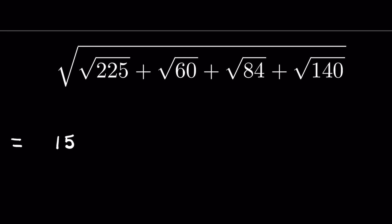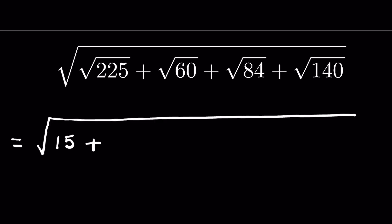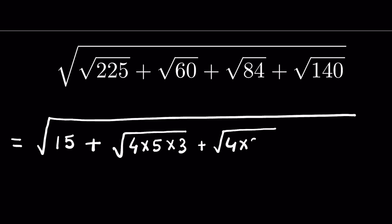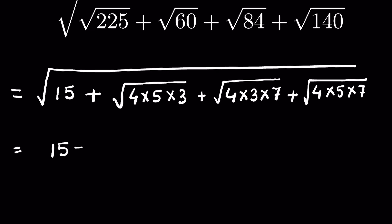Because 15 × 15 = 225, we can write 225 as 15² under the square root, so the square root and square cancel. Plus √60, we can write 60 as 4 × 5 × 3 under the square root. Plus √84 as 4 × 3 × 7 under the square root. Plus √140 as 4 × 5 × 7 under the square root.